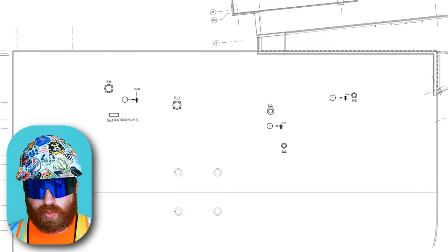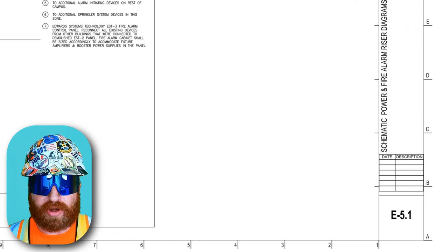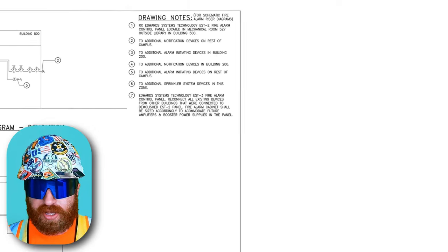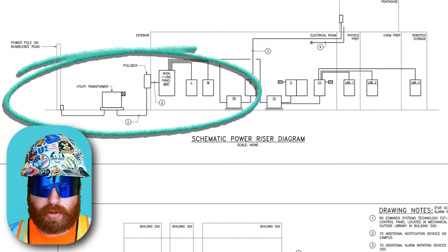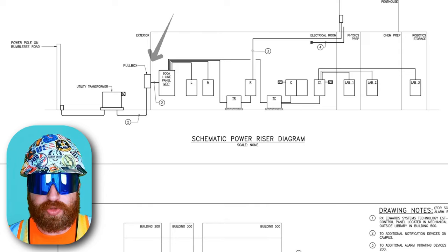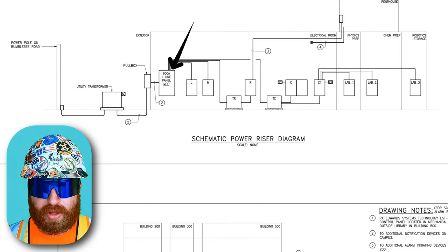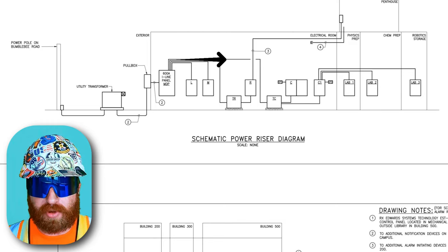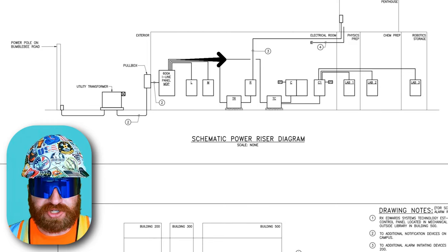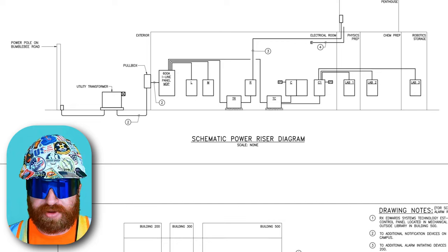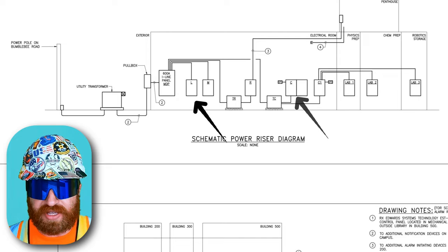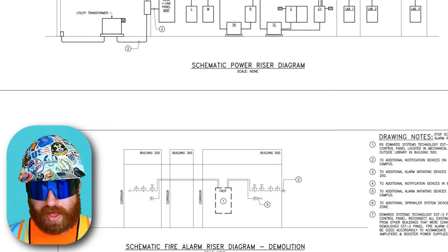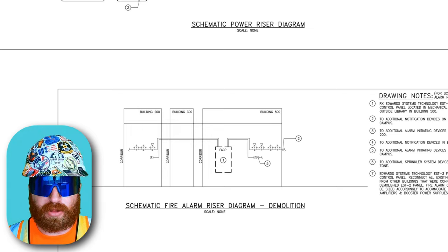Moving to E5.1, schematic power and fire alarm riser diagrams. Zooming in on the power riser diagram, this gives a simple layout of how power enters the building from the transformer to the meter to the main switchgear or switchboard. From there, it shows a simple one-line diagram of how the rest of the branch panels are fed in relationship to that main switchboard. We can actually see panel boards L and C from our earlier panel board schedule review among the rest of the branch panels. Right below that is the same diagram for the fire alarm system.